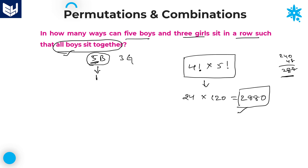To recap: the condition states all 5 boys sit together, so we take them as a single entity. This single entity plus 3 girls gives 4 members, arranged in 4 factorial ways. Within the single entity, the 5 boys can be arranged in 5 factorial ways. The total number of ways is 4 factorial into 5 factorial, which is 24 into 120, equal to 2880. That is the required answer.